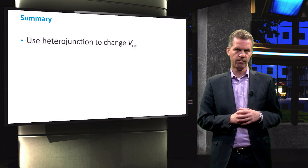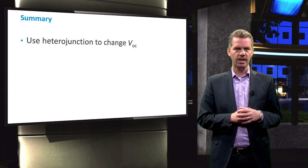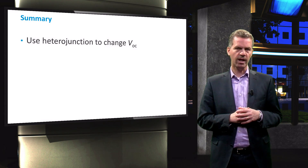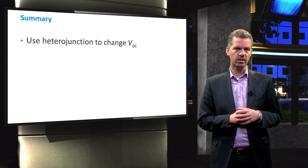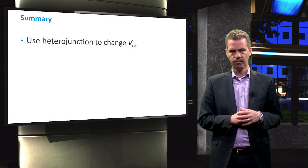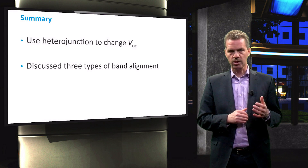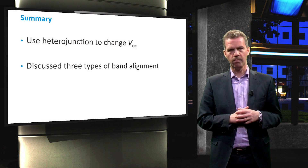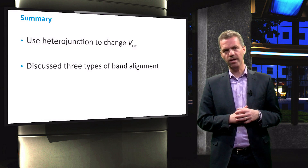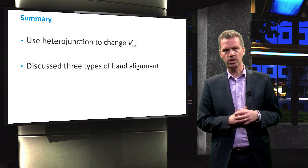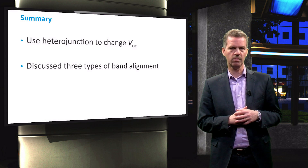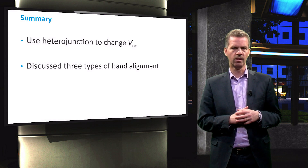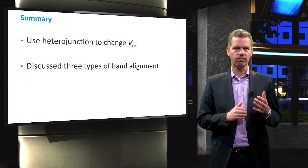To summarize, we have seen that using a heterojunction we are able to change the VOC. We discussed the three types of band alignment when a junction between two semiconductor materials having different band gaps is formed, and we constructed a band diagram for a straddling-type junction.